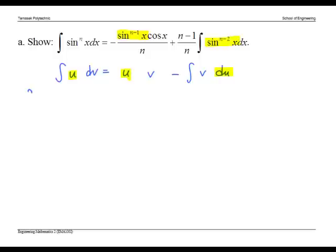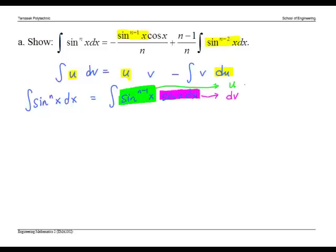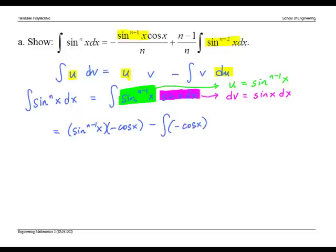Let's rewrite the expression. We let sin^(n-1) x be u and sin x dx be dv. Applying the integration by parts formula, we have u times v, which is the integral of sin x, minus the integral of v du. Differentiating sin^(n-1) x gives (n-1)sin^(n-2) x, and then differentiating sin x gives cos x.